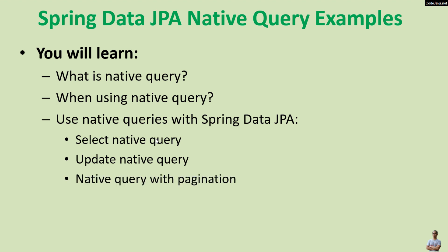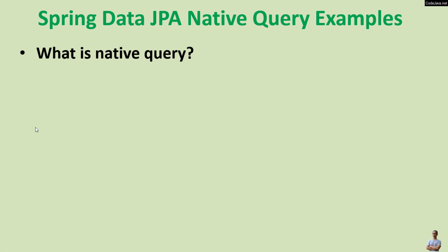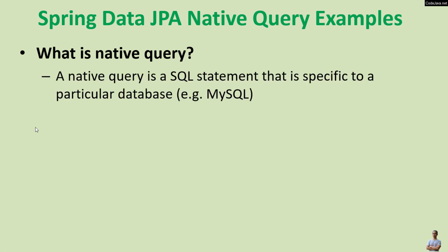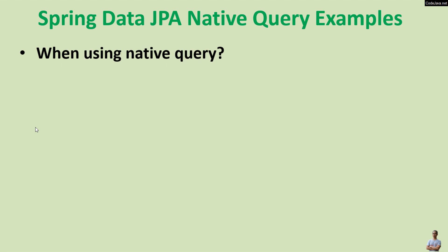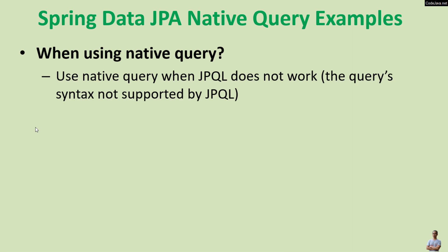So what is native query? A native query is an SQL statement that is specific to a particular database, for example MySQL. A native query syntax differs slightly from JPQL, or Java Persistence Query Language, which is used by Spring Data JPA by default. Generally we should use native query when JPQL does not work — in other words, when the query syntax is not supported by JPQL, then we need to use native query.